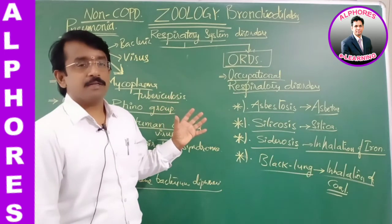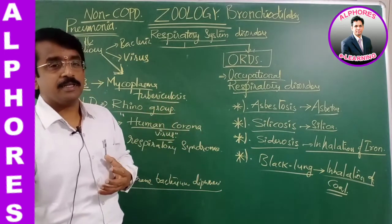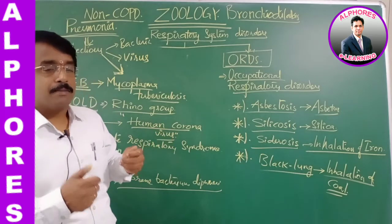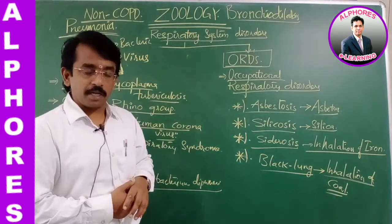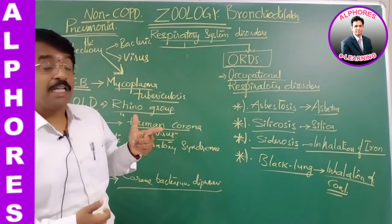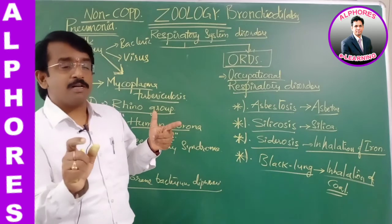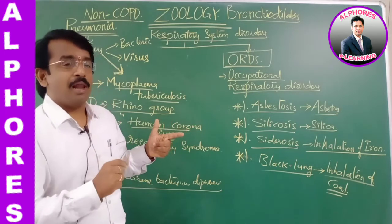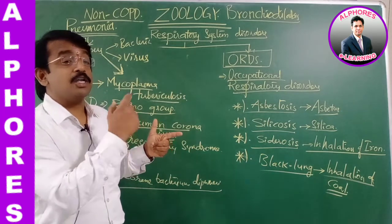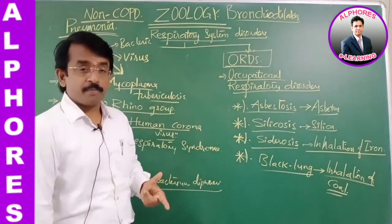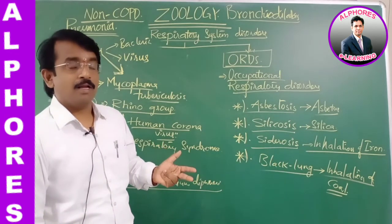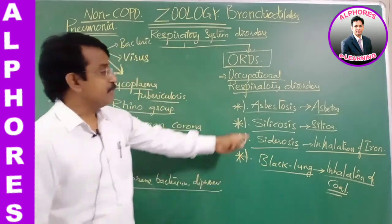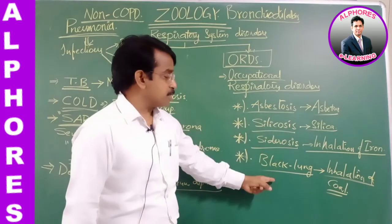Prevention of occupational respiratory disorders is very important. Workers must keep a mask on in their working places. They should also be given rest and working gaps at regular intervals so they are not continuously exposed to these particles. At regular intervals, one should also be tested. This is how one can overcome occupational respiratory disorders, which include asbestosis, silicosis, siderosis, and black lung disease.